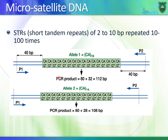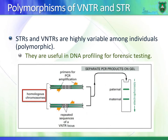On a chromosome, you can have a CA repeat — CA, CA, CA — repeated 16 times. On the other chromosome, you can have the same exact repeat but repeated only 14 times instead of 16. So you can have a lot of variation even within one individual.